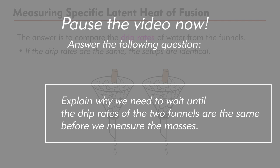Please explain why we need to wait until the drip rates of the two funnels are the same again before we measure the masses of the melt water. Pause the video for a while and answer the question.